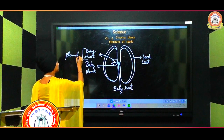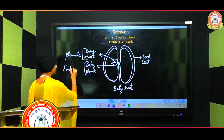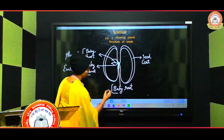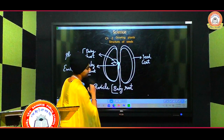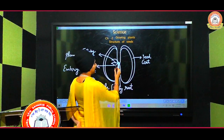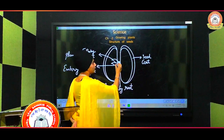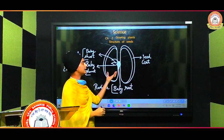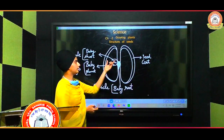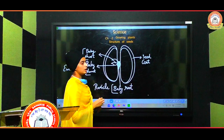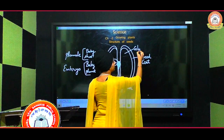There are scientific names for these parts. The baby shoot is also known as the plumule, the baby plant inside is known as the embryo, and the baby root is also known as the radicle. Two more parts are there: one is a scar on the seed — which is where the seed was attached to the fruit — and one is a small hole called the micropyle, through which water and air can enter the seed. These two halves are known as cotyledons.